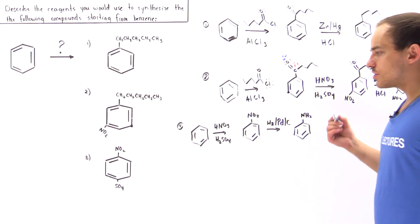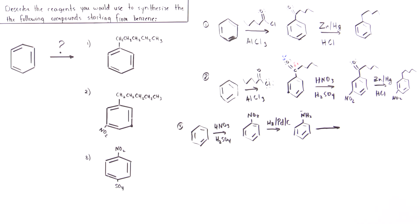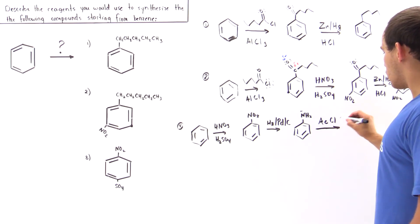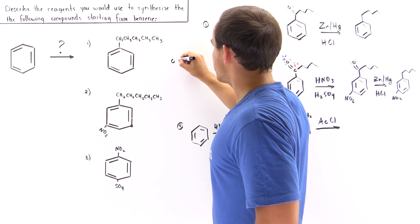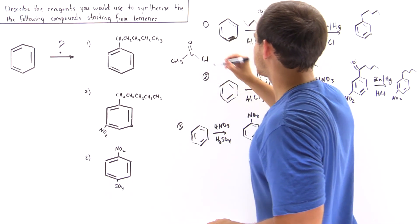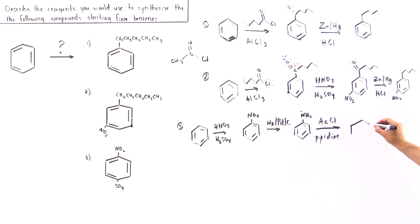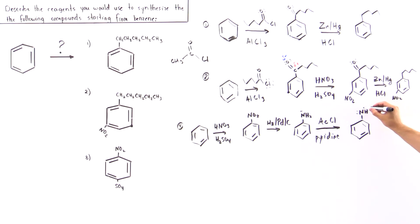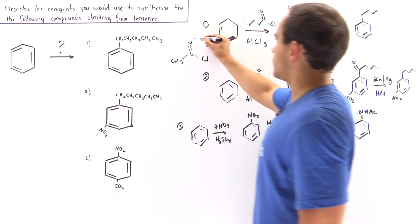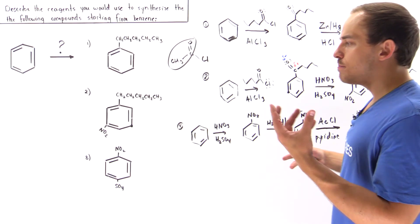The amine alone is still not ideally suited, so in the next step we react it with acetyl chloride in the presence of pyridine. This places an acetate group on the nitrogen, forming an acetamide group. We have now created a group that is ortho/para-directing.